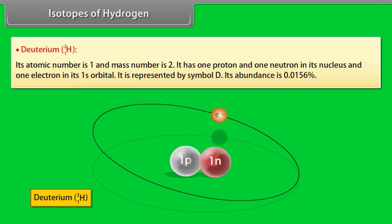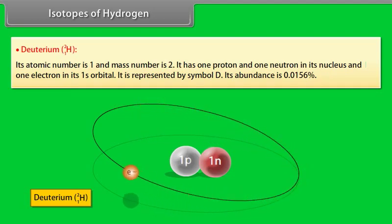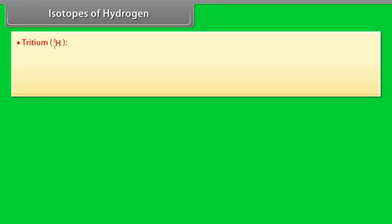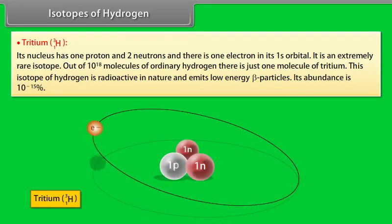Tritium. Its nucleus has one proton and two neutrons and there is one electron in its 1s orbital. It is an extremely rare isotope. Out of 10 to the power 18 molecules of ordinary hydrogen, there is just one molecule of tritium. This isotope of hydrogen is radioactive in nature and emits low-energy beta particles. Its abundance is 10 raised to the power minus 15%.